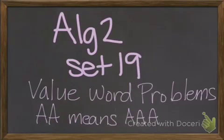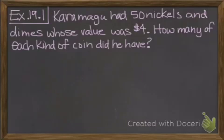Algebra 2 set 19: value word problems and AA means AAA. We're just going to start out with an example for these value problems.